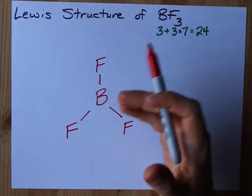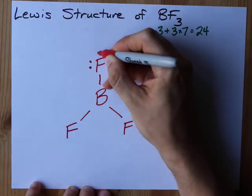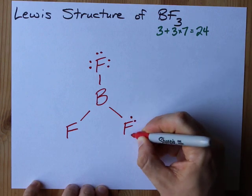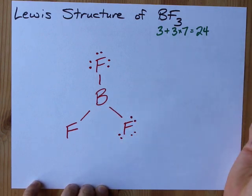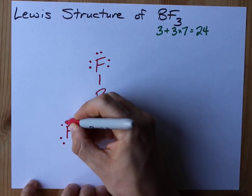And then I like to fill the octets of my outer atoms next. This is 8, 10, 12 total electrons, 14, 16, 18, 20, 22, 24. There you go.